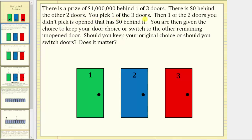You pick one of three doors. Then, one of the two doors you did not pick is opened, revealing zero dollars behind it. You are then given the choice to keep your door choice or switch to the other remaining unopened door. Should you keep your original choice or should you switch doors? Does it matter?